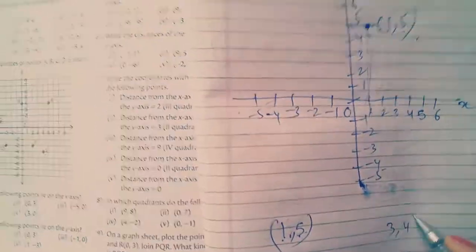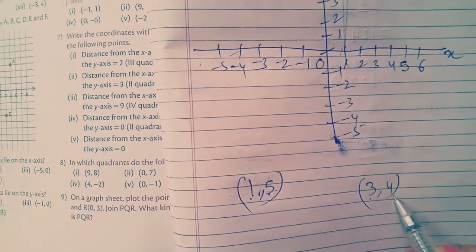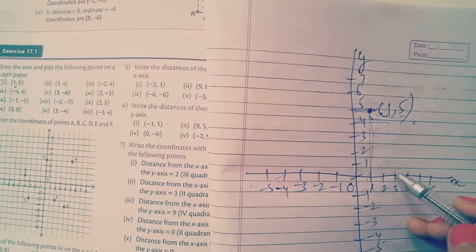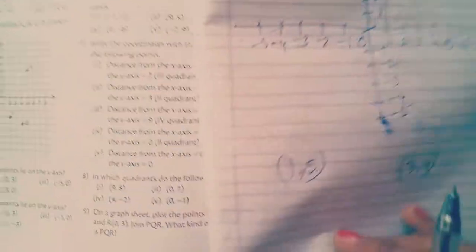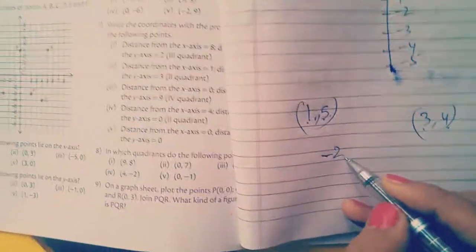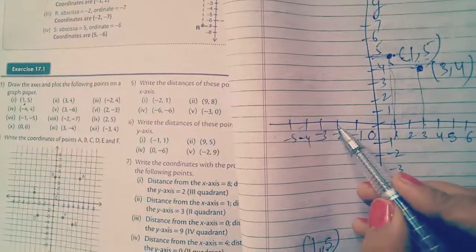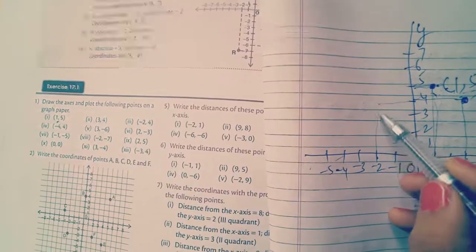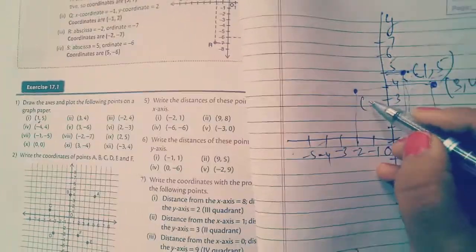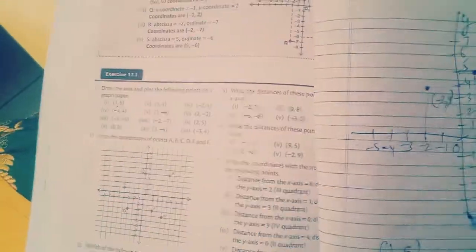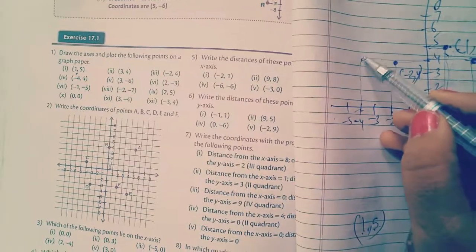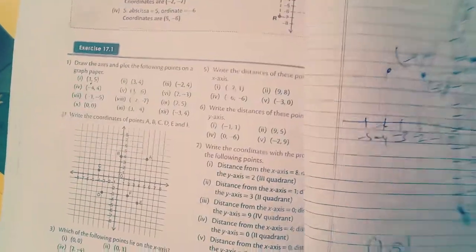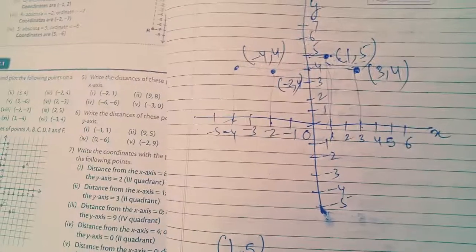Then third point is (-2, 4). Minus 2 is here and 4 is positive. So here they will meet, (-2, 4). Next one is (-4, 4). Minus 4 is here and 4 is here. This one. So like this, you can plot the graph of the given points.